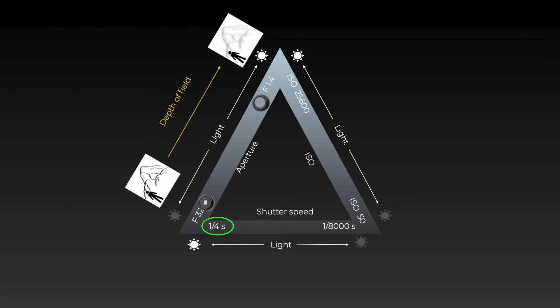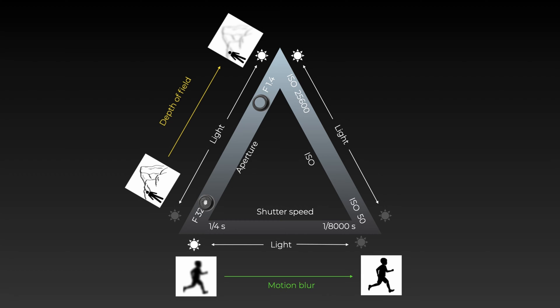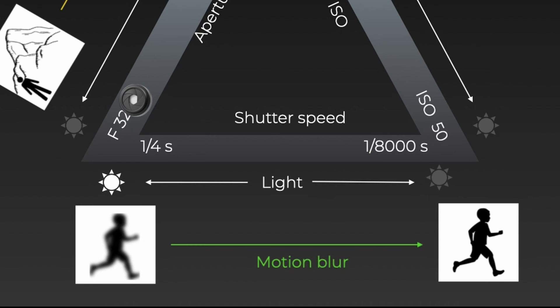Next we have shutter speed. A slow shutter speed lets in more light than a faster shutter speed, which blocks more light making the image darker. This also has an added effect: motion blur. The slower the shutter speed, the more blur in the image. The faster the shutter speed, the less blur, and it would be used if taking a picture of fast moving subjects like flying birds or sports.